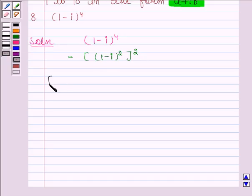Let's now find the square of 1 minus iota. We will use the identity of a minus b whole square.